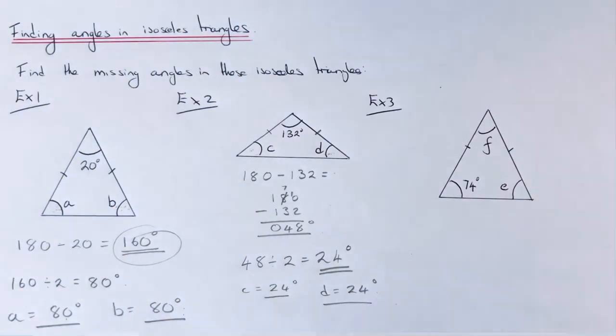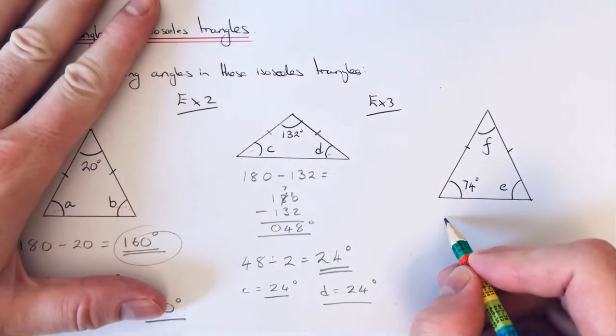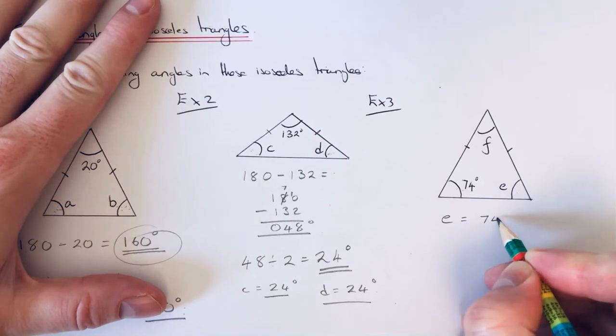Let's move on to our final example, example 3. This one is a little bit different. This time we've got the angle at the bottom of the triangle and we need to find this one and this one. Angle E is easy because these two at the bottom are both the same, so angle E would be 74 degrees.